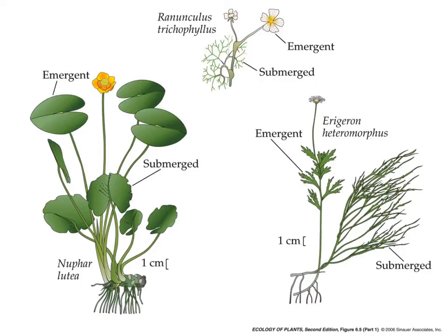Here are some plants that show dimorphic leaves on the same individual. On the left, the water lotus, Nuphar — the emergent leaves are smooth and entire, while those that are submerged have a raggedy margin. Ranunculus trichophyllus at the top has foliose emergent leaves, and those that are submerged are very dissected. We can see the same with Erigeron heteromorphus on the right.